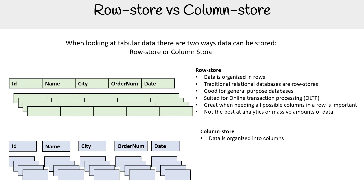With column store, data is organized into columns, and it's faster at aggregating values for analytics. Imagine you want to count how many cities there are across millions of records — if the data is stored and queried by column, it's a lot faster.